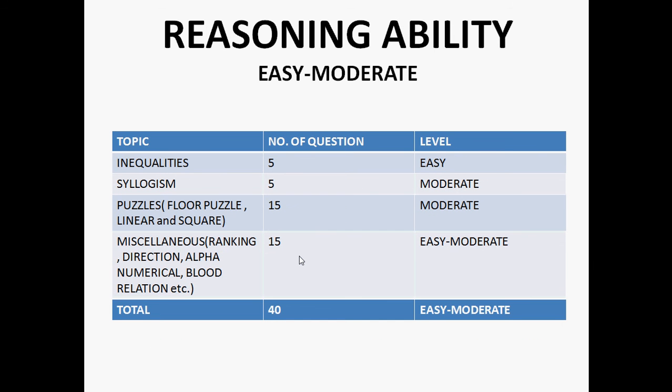Now, let's come to the reasoning section. Reasoning was easy to moderate. There were 5 from inequalities which was very easy, 5 from syllogism which was of moderate level, and syllogism questions were very direct. There were 15 questions from puzzles which was of moderate level. Three types of puzzles were asked in the exam: one was floor puzzle, another was linear, and third one was square puzzle.